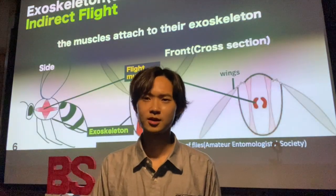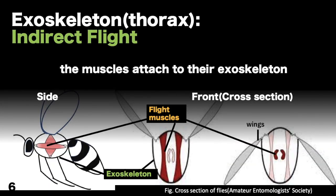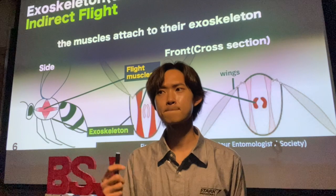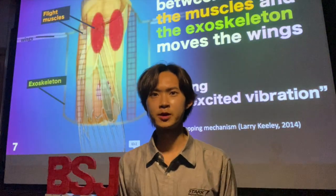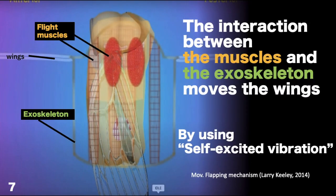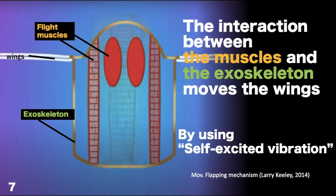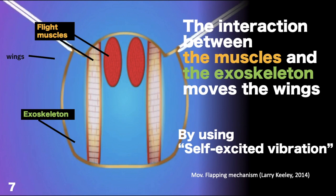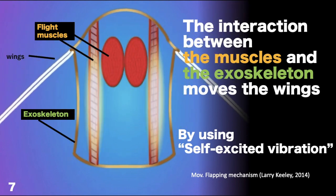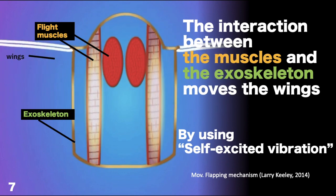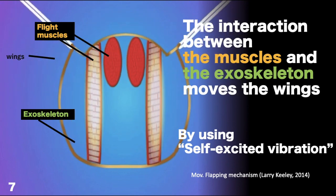Second, the skeleton. The fly muscles attach not to their wings but to their elastic skeleton, which acts like a spring. The interaction between the muscles and the skeleton deforms the skeleton at high frequency, making it possible to flap their wings beyond limits. This vibration is called self-excited vibration.